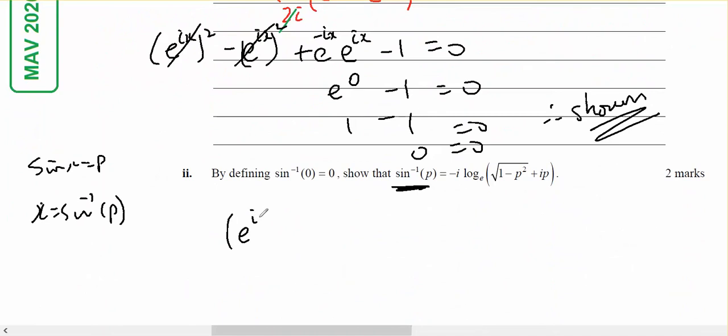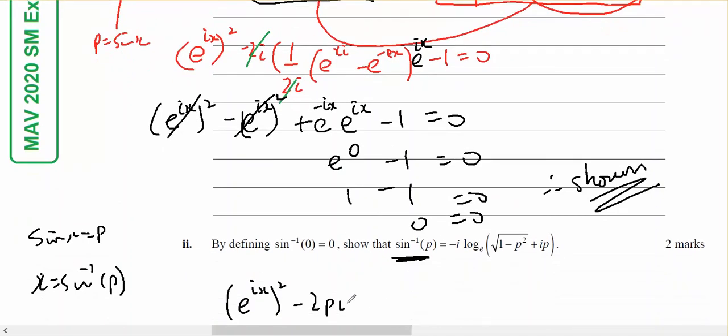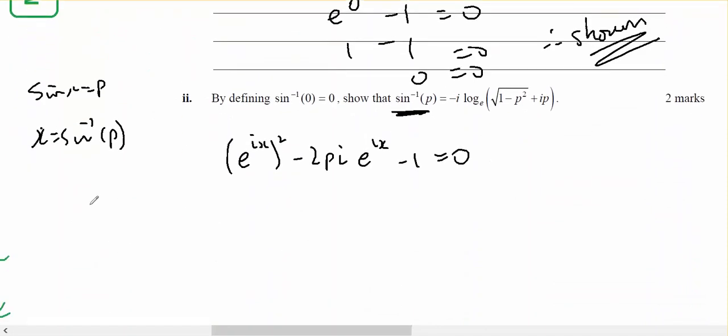I've got e to the ix squared minus 2pi e to the ix minus 1 equals 0. I'm going to use the quadratic formula. So a equals 1, b equals minus 2pi, and c equals negative 1.